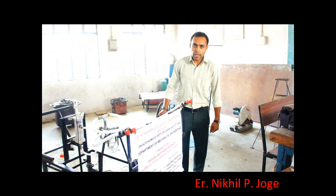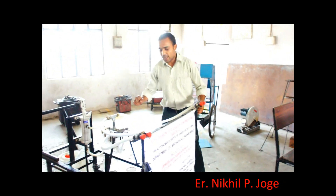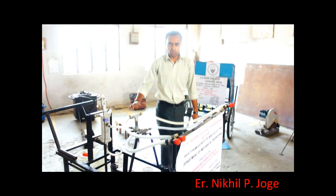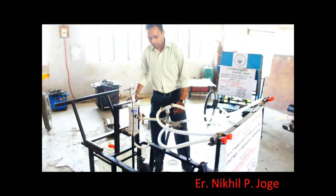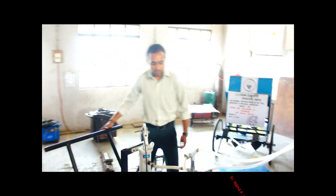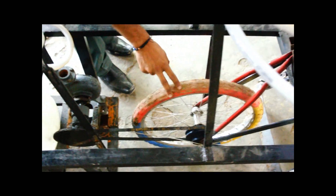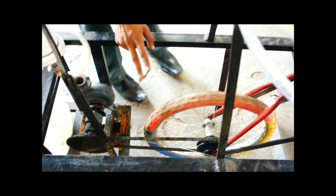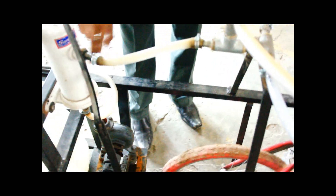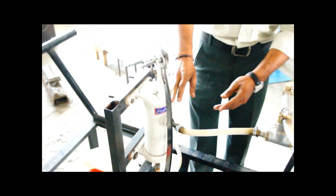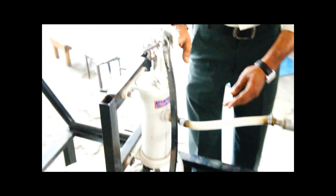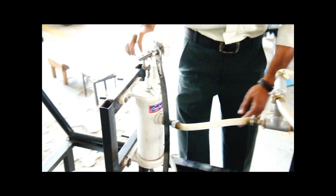I am Nikhil Dogen. I am going to explain the basic components of this machine. When the machine moves forward, the rotary motion of the wheel is converted to the reciprocating motion through the slider tank mechanism, and this reciprocating motion is used to drive the reciprocating pump.